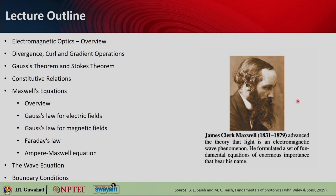Here is the picture of the great man James Clerk Maxwell, who did wonderful work advancing the theory of light and proved that light is an electromagnetic wave phenomenon. He formulated a set of fundamental equations of enormous importance. These equations were basically done by Gauss, Faraday and Ampere, but the set of four equations describes the electromagnetic property of light, and that is why they bear his name.